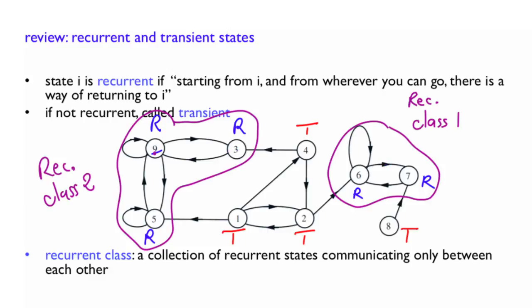Now, in the case where you have two recurrent classes like here or more, it is pretty clear that in the long run the steady state behavior of the Markov chain will really depend on where you started. So, for example, if your Markov chain started in that recurrent class, there is no probability that in the long run it will be in that class.